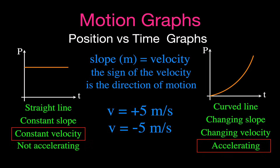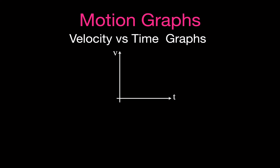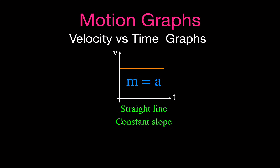For the velocity versus time graph, the line will always be straight — not necessarily horizontal, but always straight. The slope of the line on the velocity versus time graph is equal to the acceleration. Since we always have a straight line, we always have a constant slope and therefore constant acceleration.